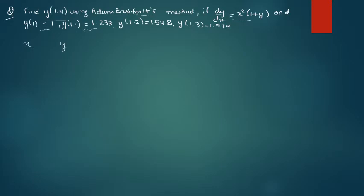You can see that if x is 1, y is 1, right? So let's start with x naught. So your x naught is 1, your x1 is 1.1, your x2 is 1.2, your x3 is 1.3, and you need to find out the value of y at 1.4.